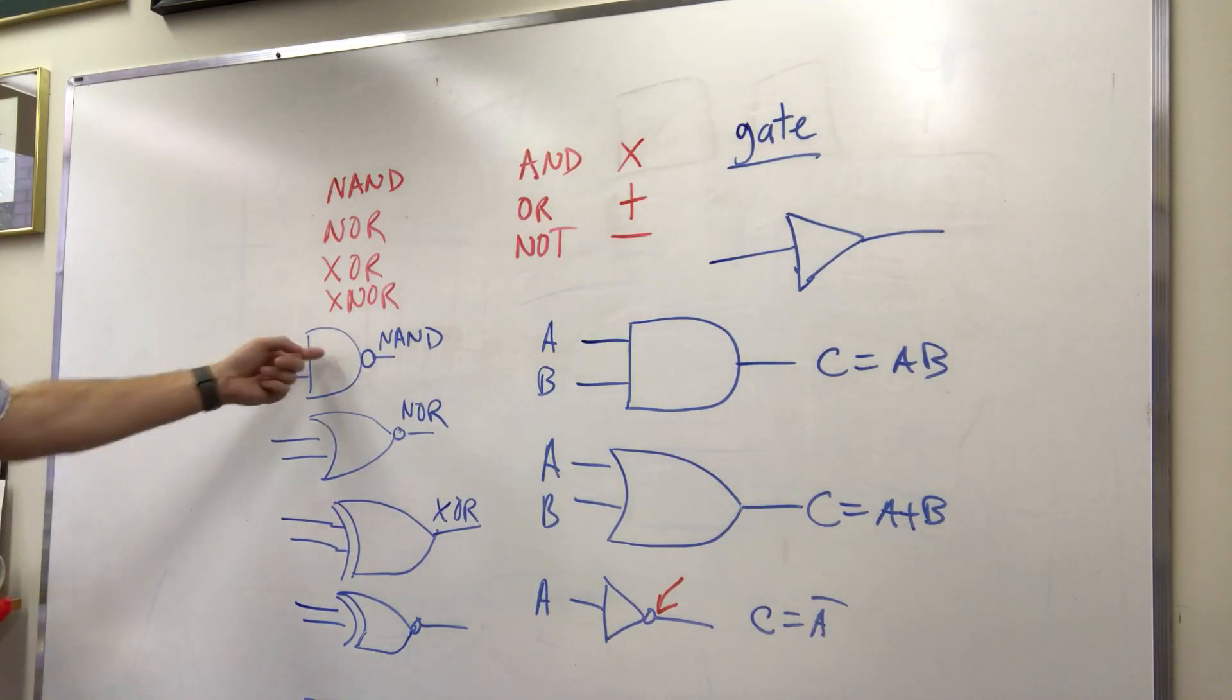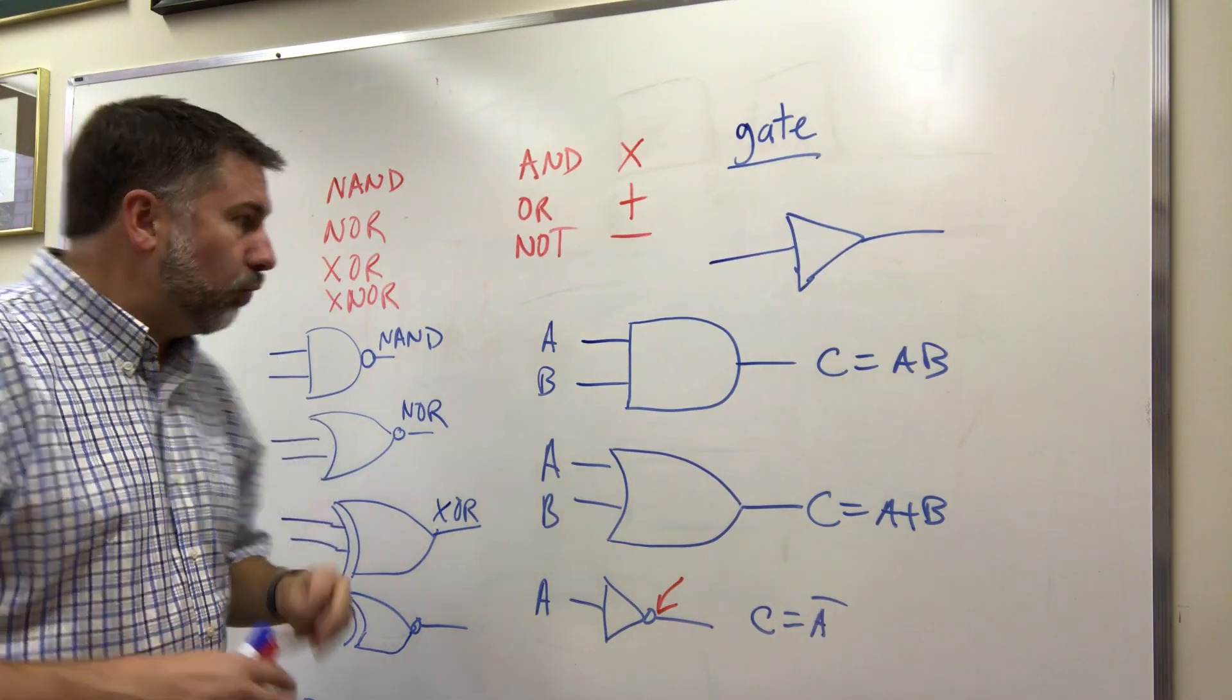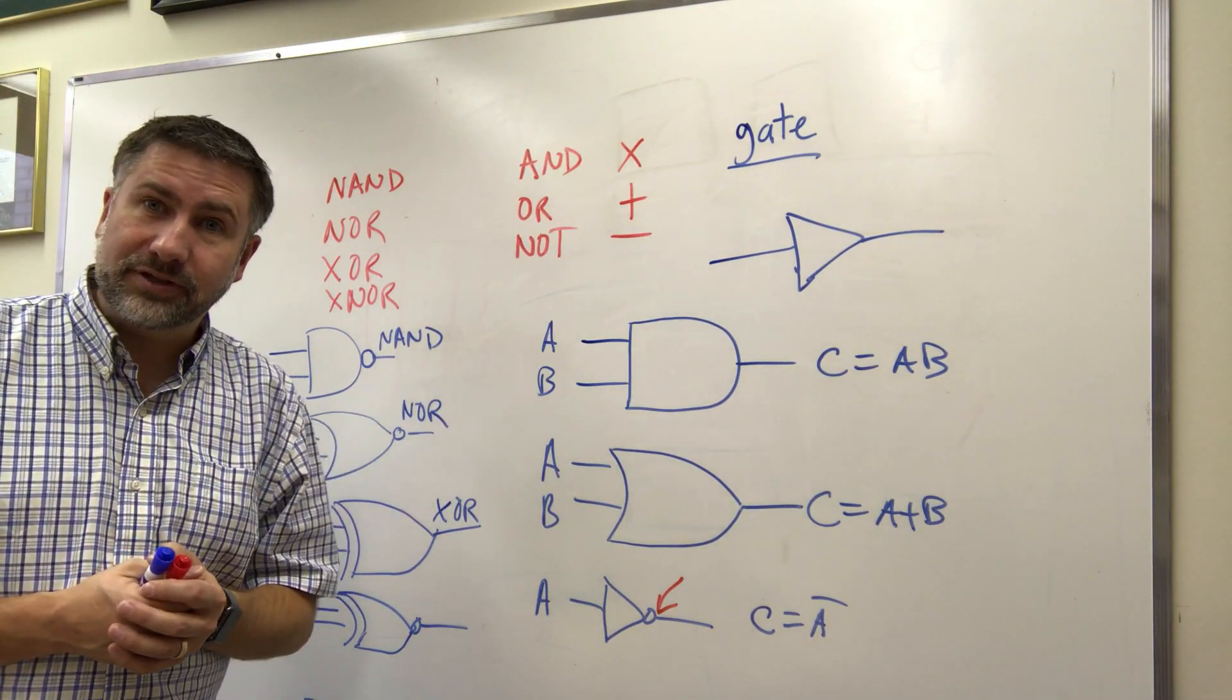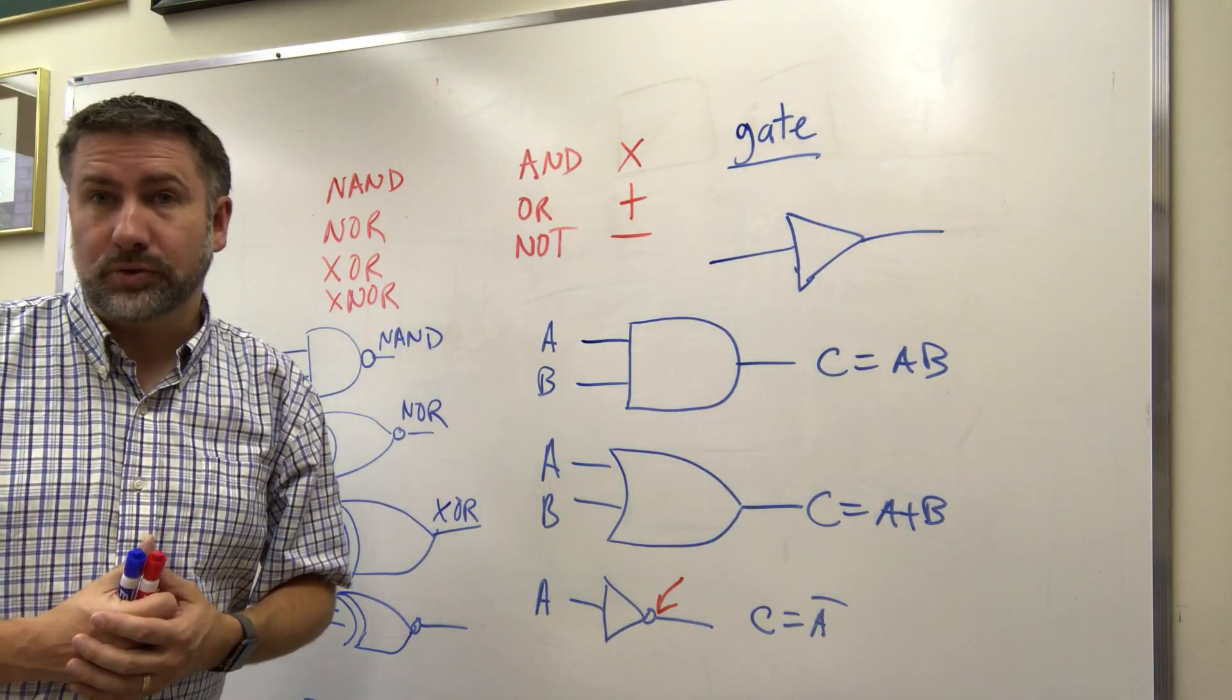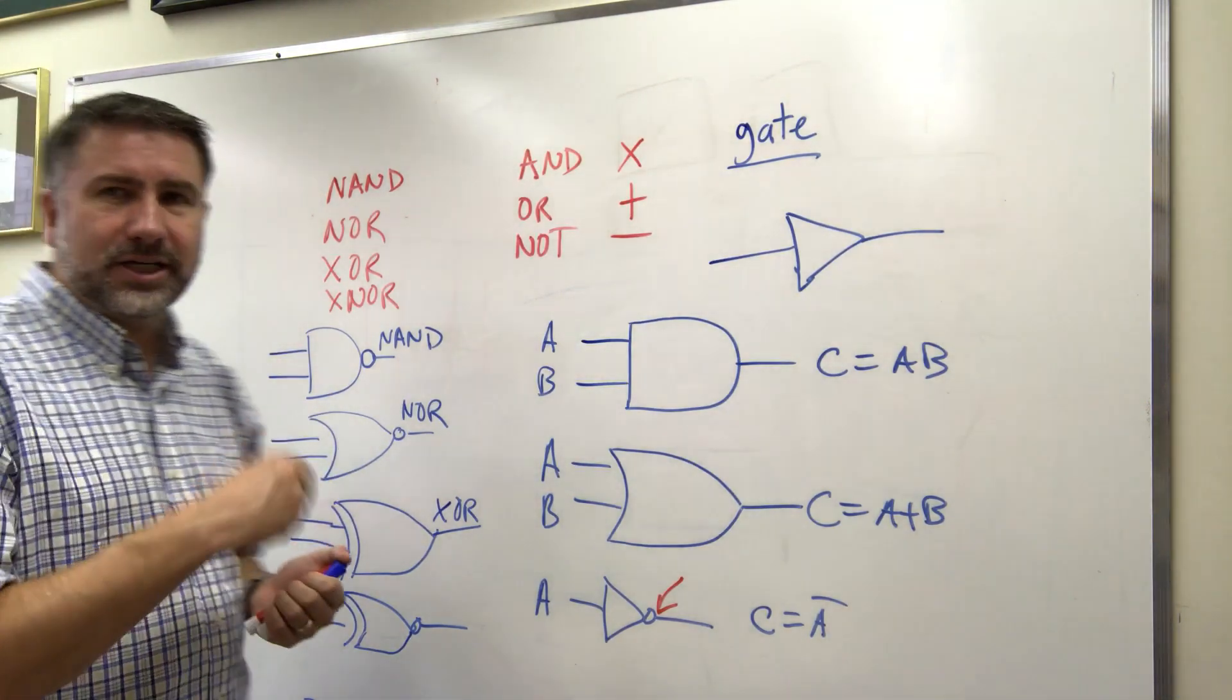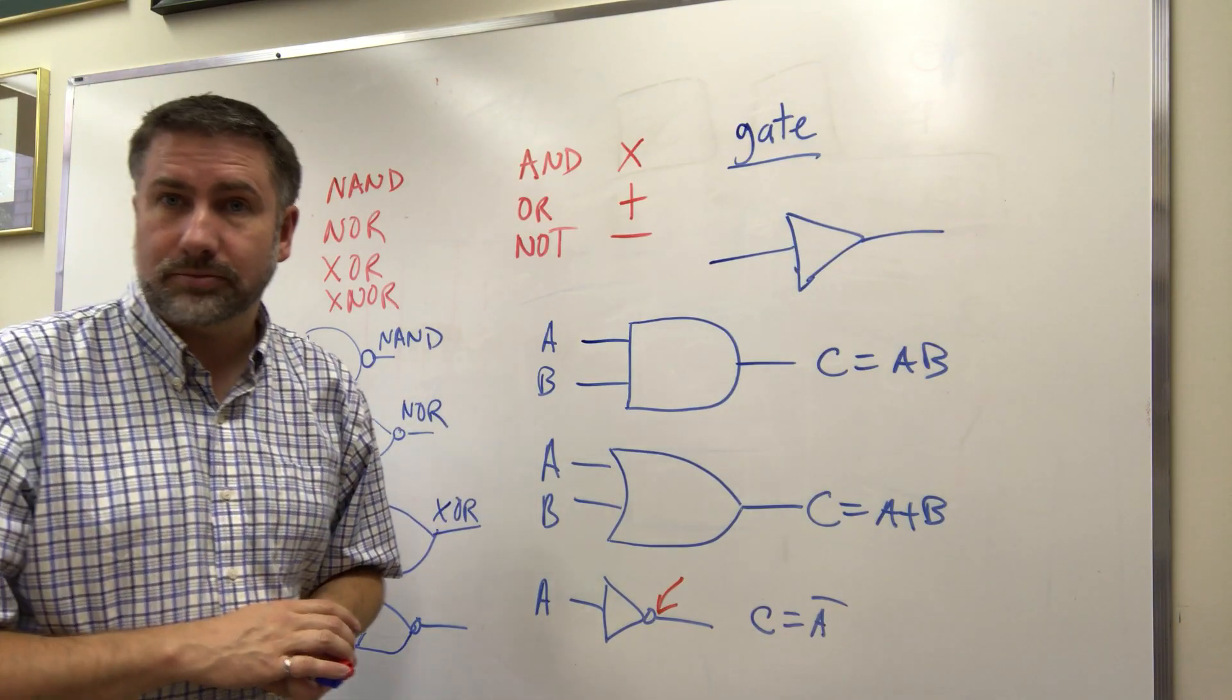So those are the one, two, three, four, five, six, seven gates that we will use and with these seven gates, often with fewer than these seven gates, the buffer makes eight, you can build any computer which is a really kind of exciting thing to think about. So these are the gates that we're looking at. In the next video we'll look at how you might be able to combine these gates to solve some logical problems.